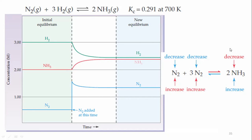Conversely, if you increase the concentration on the product side, there is more stress on the product side and the reaction proceeds towards the backward direction. With the backward reaction proceeding, the concentration of ammonia decreases and the concentrations of N₂ and H₂ increase.